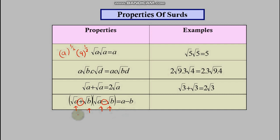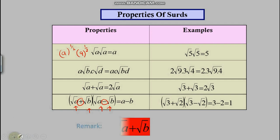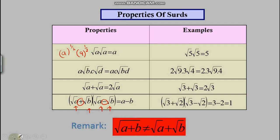Also important: if you have the same surds with an opposite middle sign — for example (√a + √b)(√a − √b) — it becomes a minus b straight away. So (√3 + √2)(√3 − √2) = 3 − 2 = 1. And a small but important remark: √(a+b) is definitely not equal to √a + √b.